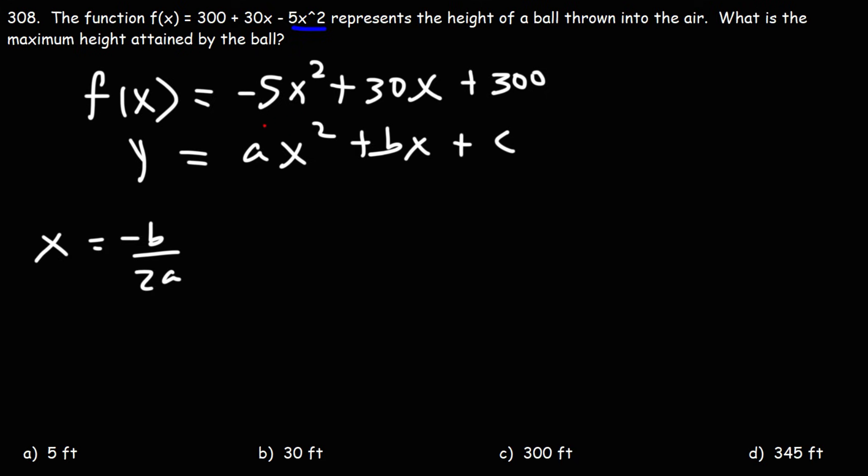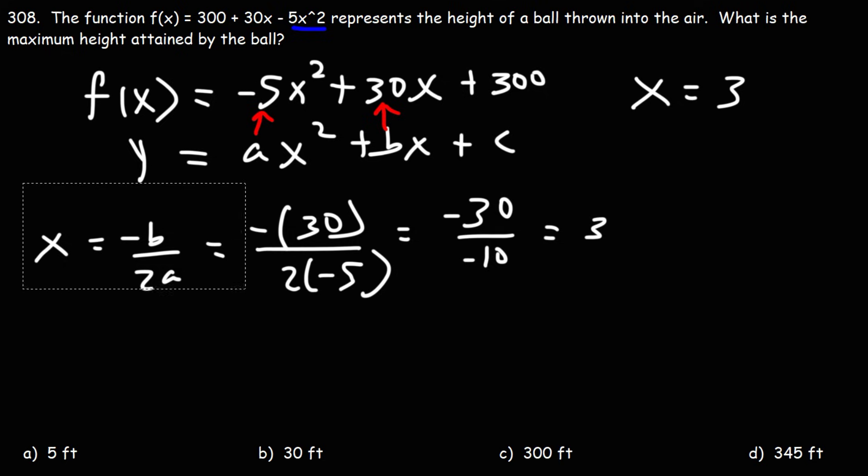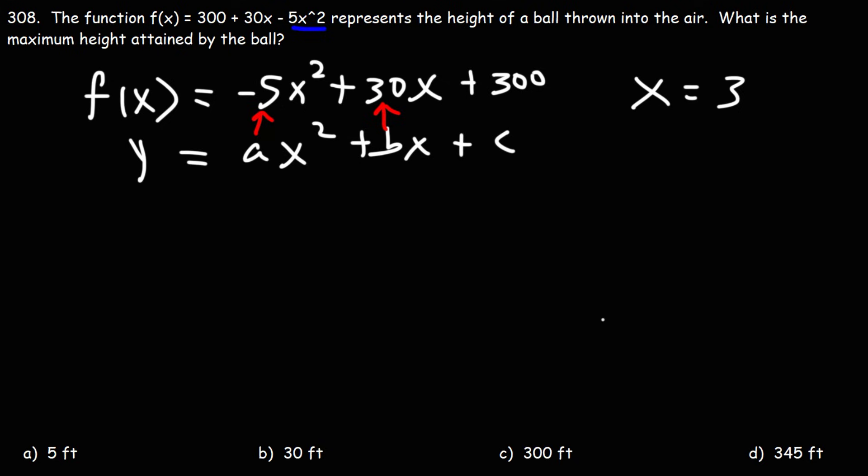We can see that a is negative 5, b is 30. So, this is going to be negative times positive 30 over 2a, or 2 times negative 5. 2 times negative 5 is negative 10. Negative 30 divided by negative 10 is 3. So, the x-coordinate of the vertex, which is the location of the maximum height, is 3.